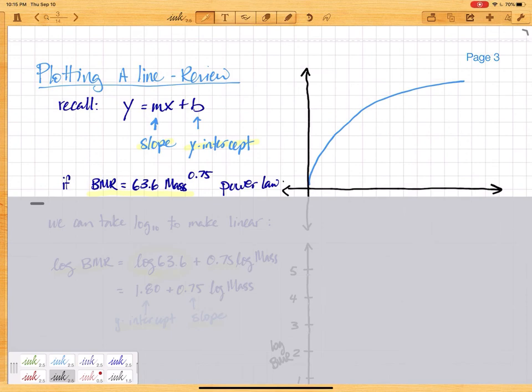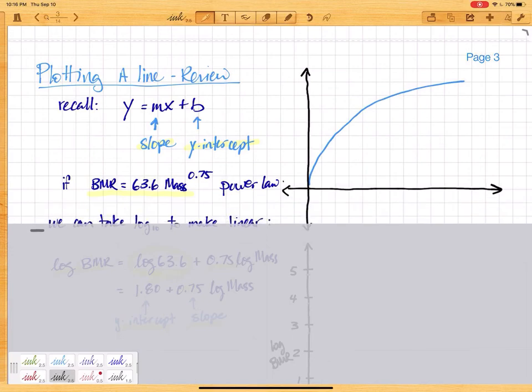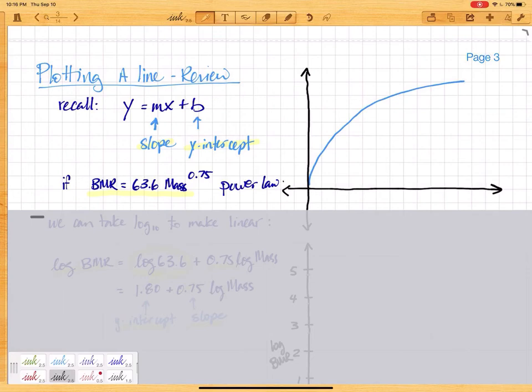Hey guys, just a quick refresher on plotting lines using our scaling equations as an example. So recall that the formula for a straight line is y equals mx plus b, where m represents the slope and b the y-intercept. If we use our scaling equations, it's a power law. If BMR is 63.6 times mass raised to the 0.75 power, this is in fact not a straight line. It's a power law, so it's going to look curved like that.